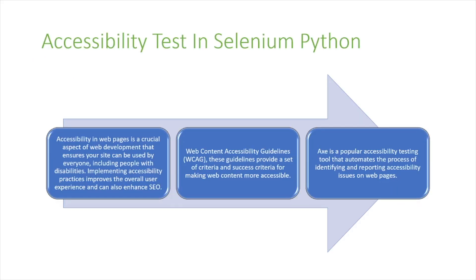In today's video we're going to talk about accessibility testing in Selenium Python. Accessibility in web pages is a crucial aspect of web development that ensures your site can be used by everyone, including people with disabilities. Implementing accessibility practices improves the overall user experience and can also enhance your SEO. Web Content Accessibility Guidelines provide a set of criteria and success criteria for making web content more accessible.